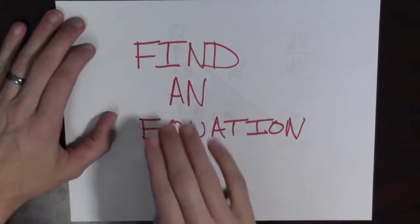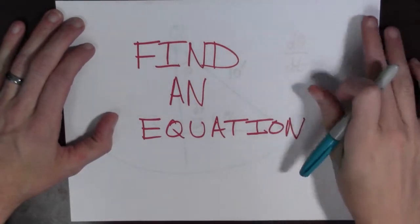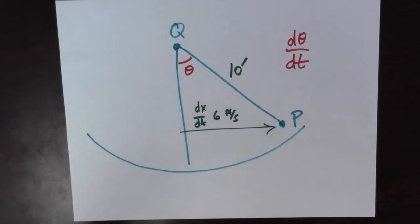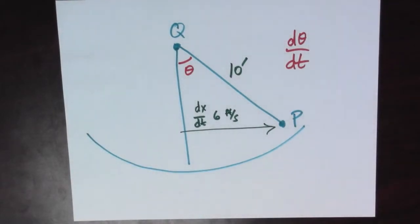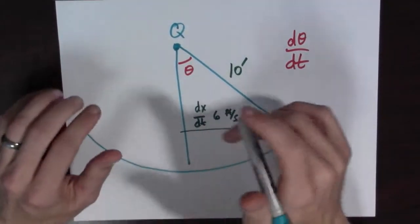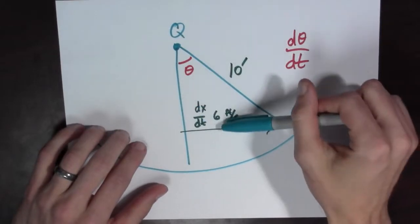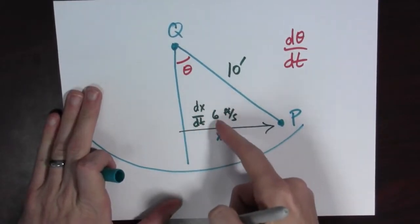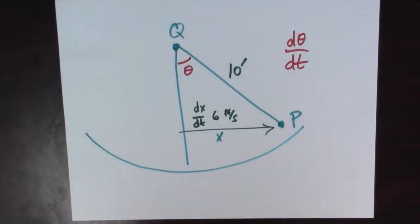Now that we have our picture, we're going to try to find an equation. So let's look at our picture again. So here's our picture and see if an equation pops out at us. If this is x and this is dx over dt, six feet per second, then let's see.